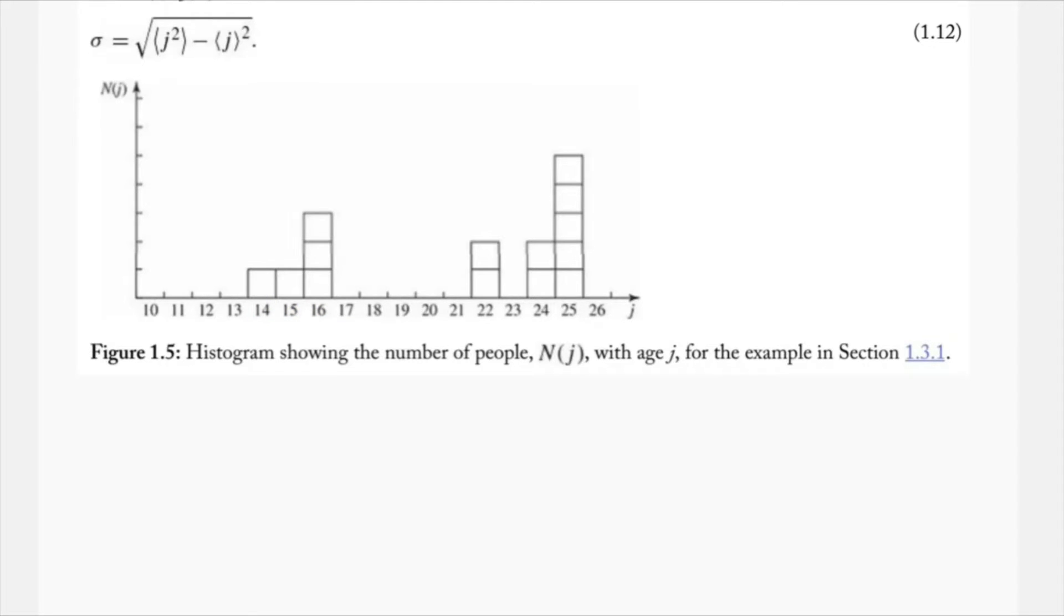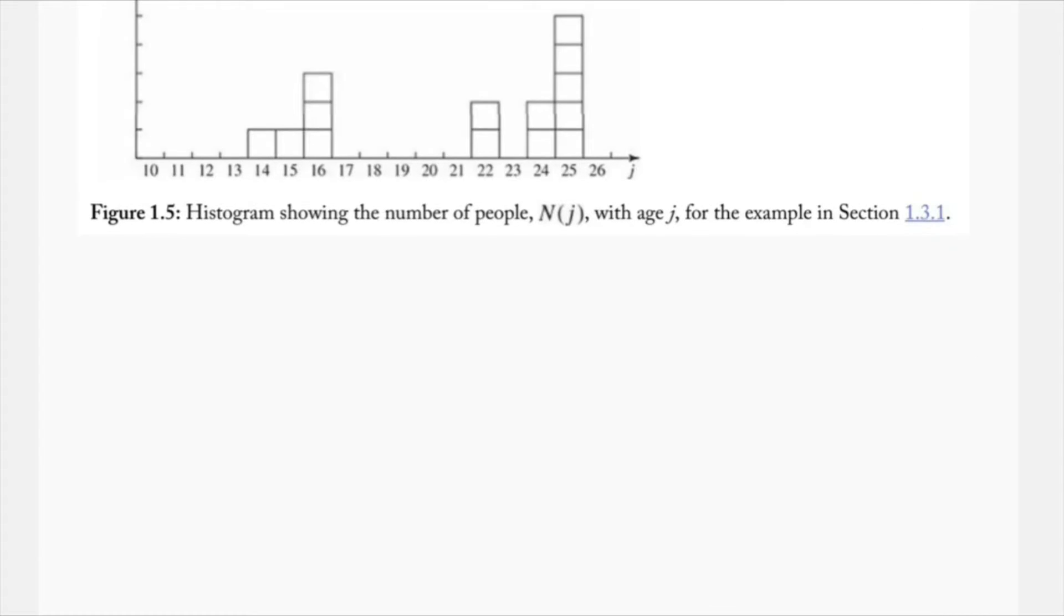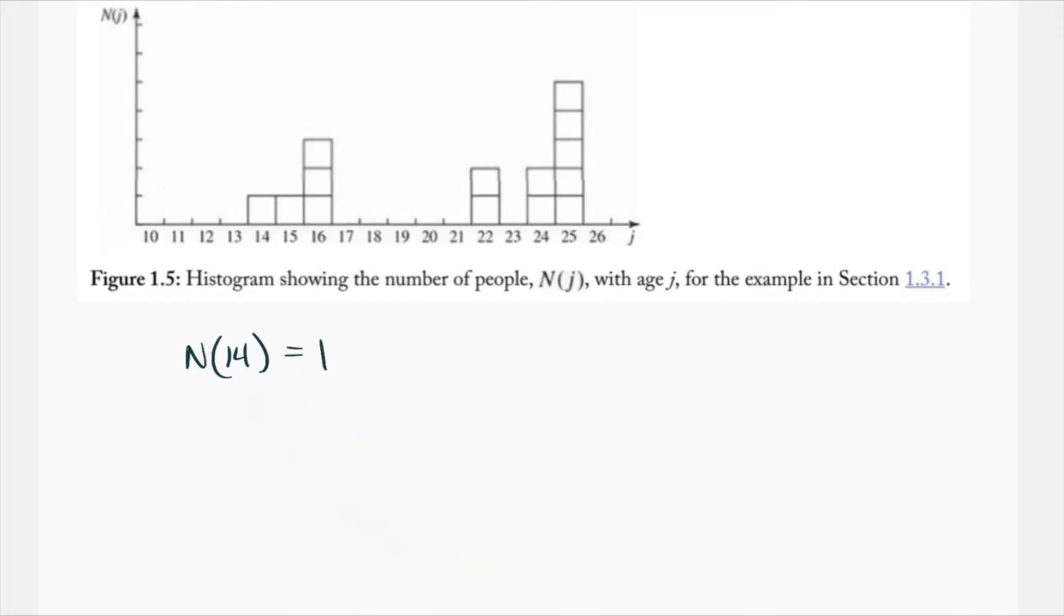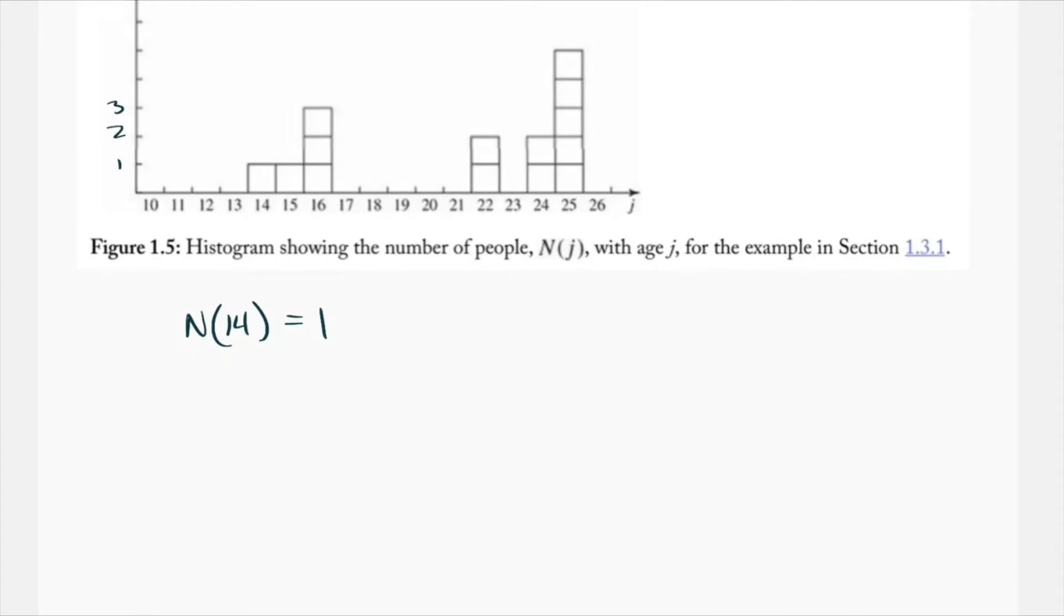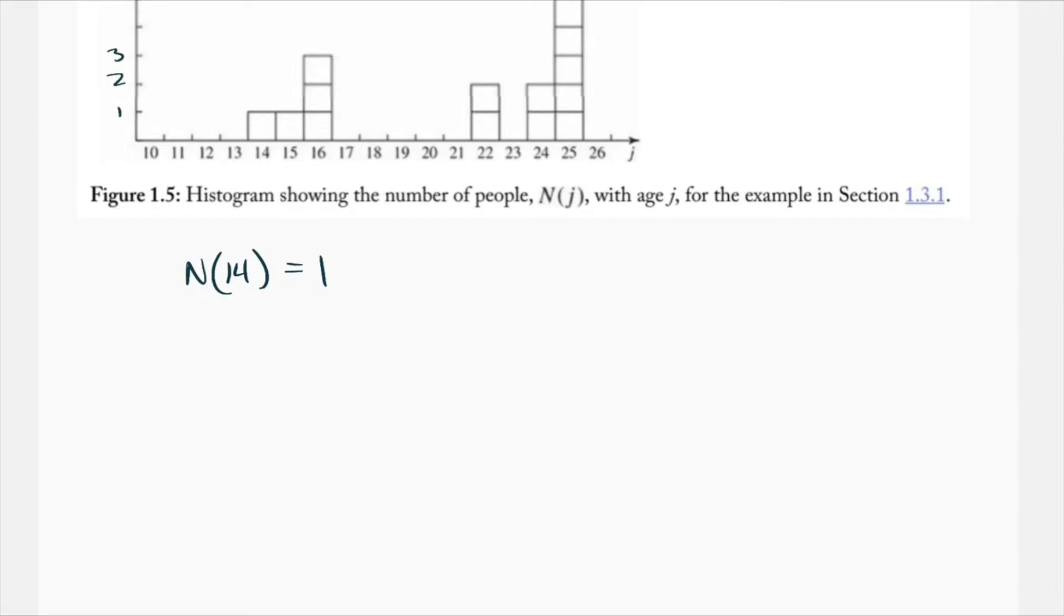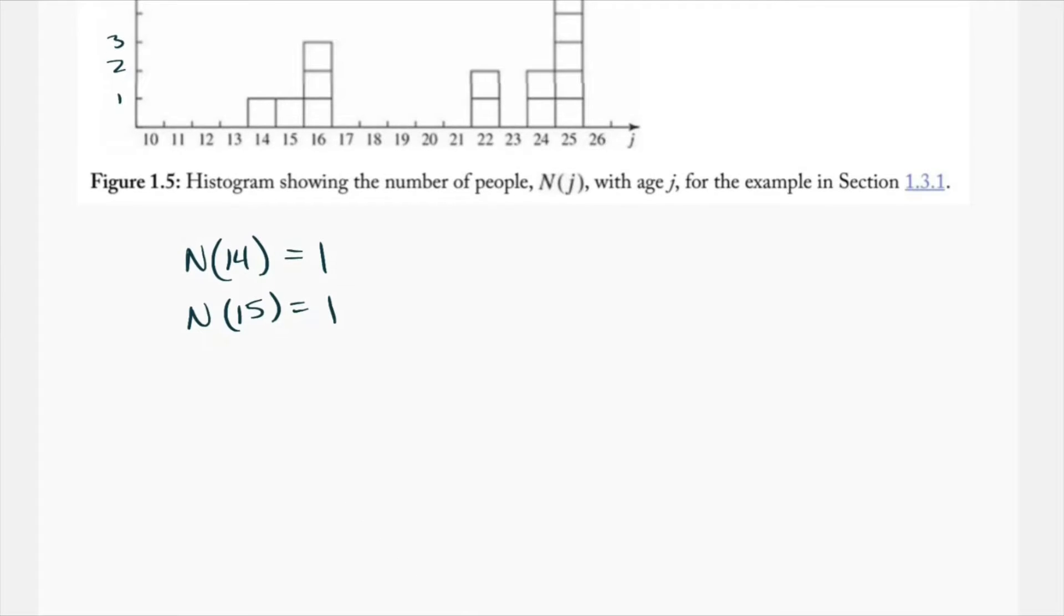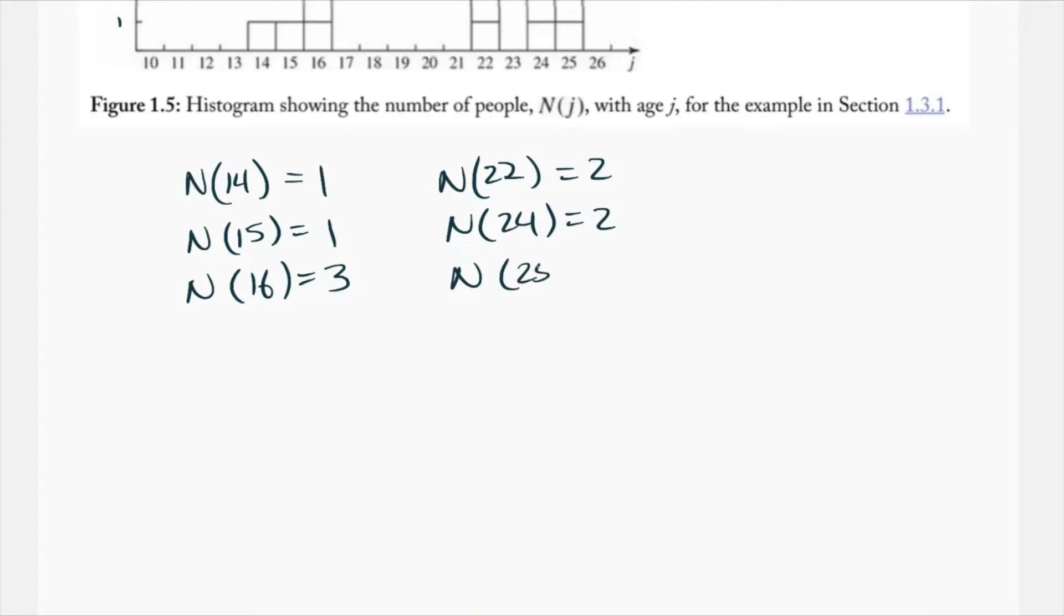The easiest way to start is to just go ahead and write out our data. So n of 14 equals 1. We got 1 person at 14 years old, assuming that the y-axis is increasing by 1s, which it is. So n of 14 is 1, n of 15 is 1, n of 16 is 3. We clearly see three boxes there. n of 22 is 2, n of 24 is 2, n of 25 is 5.